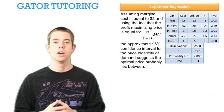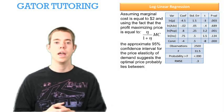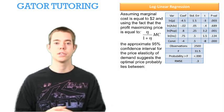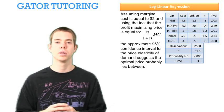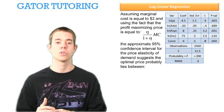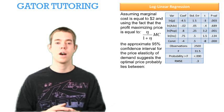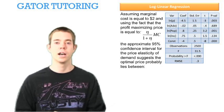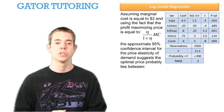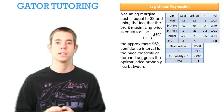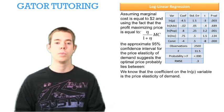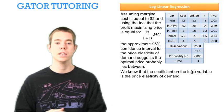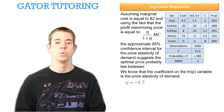The question is, assuming marginal cost is equal to $2 and using the fact that the profit maximizing price is the elasticity over one plus the elasticity times the marginal cost, the approximate 95% confidence interval for the price elasticity of demand suggests the optimal price probably lies between blank. We know that the coefficient on the ln(p) variable is the price elasticity of demand, which in this case is negative 4.5.